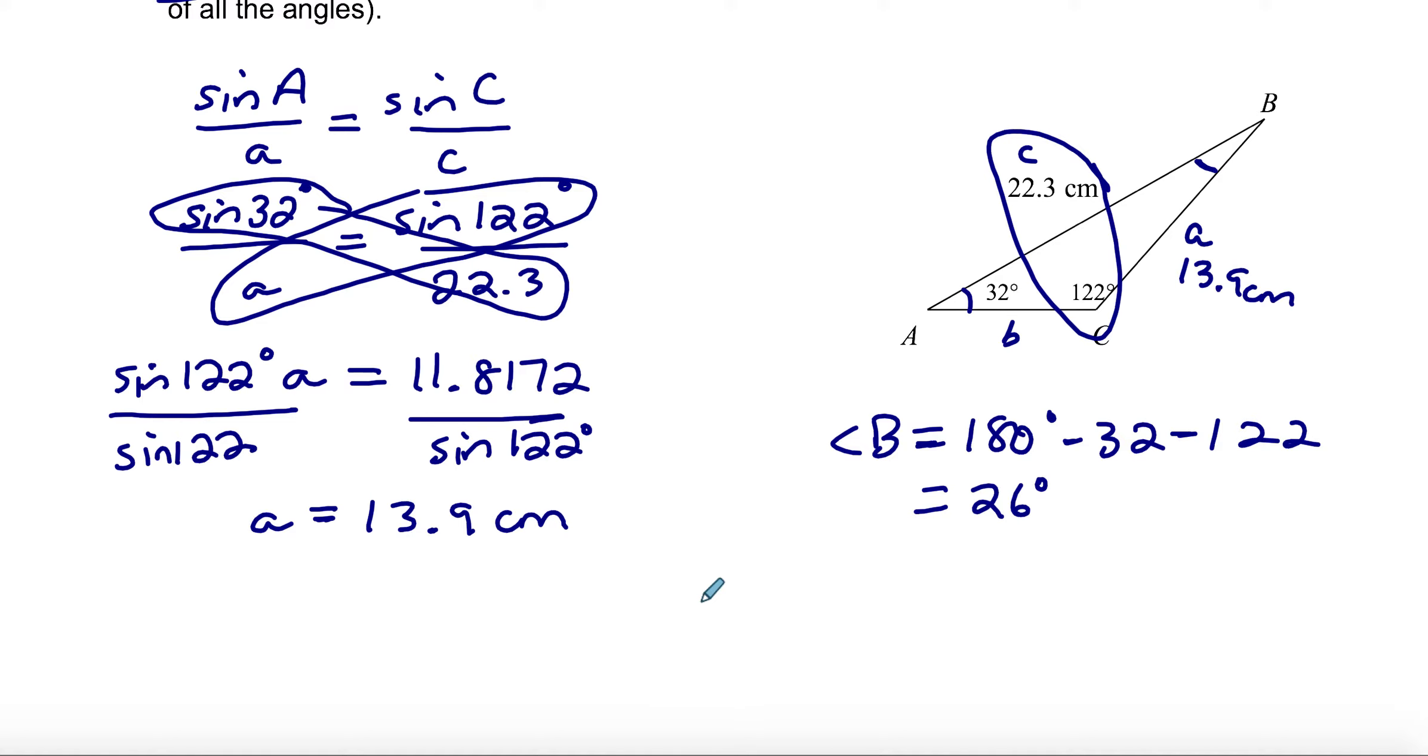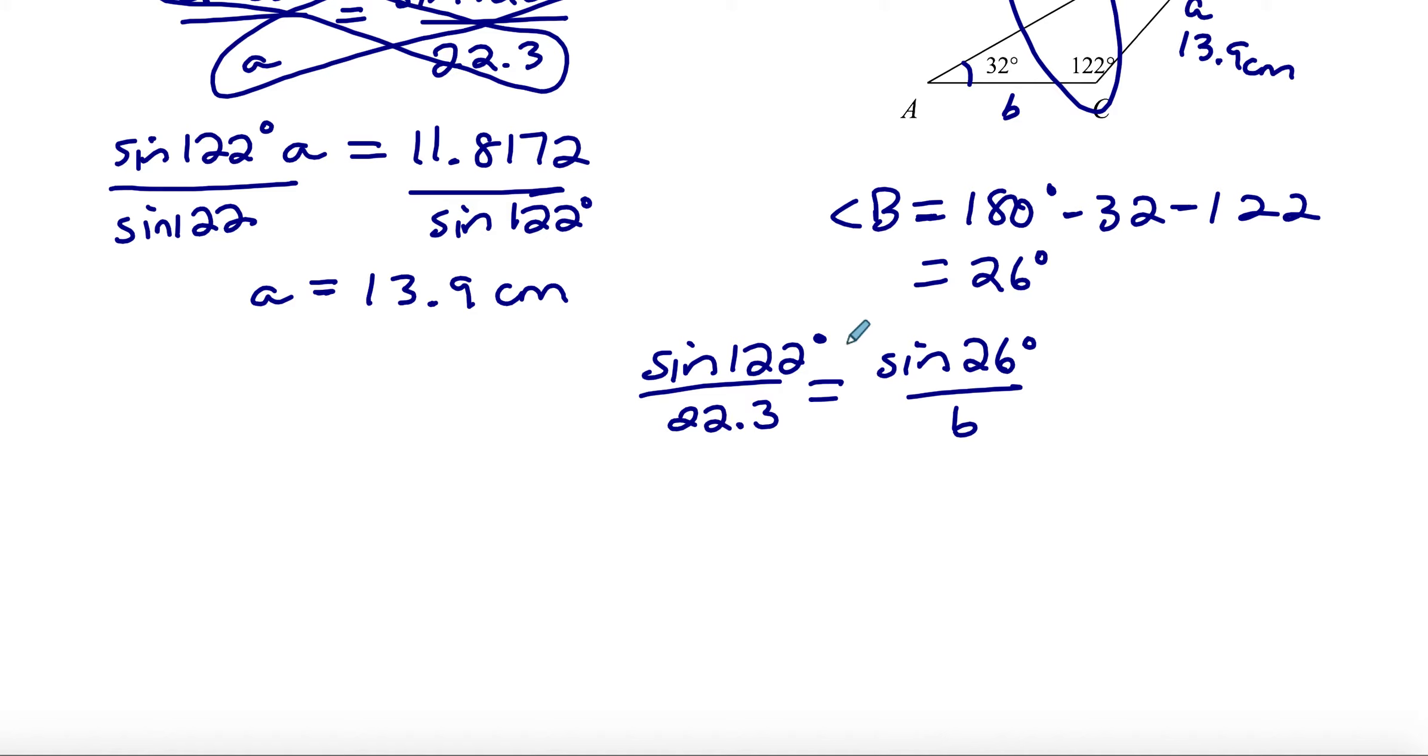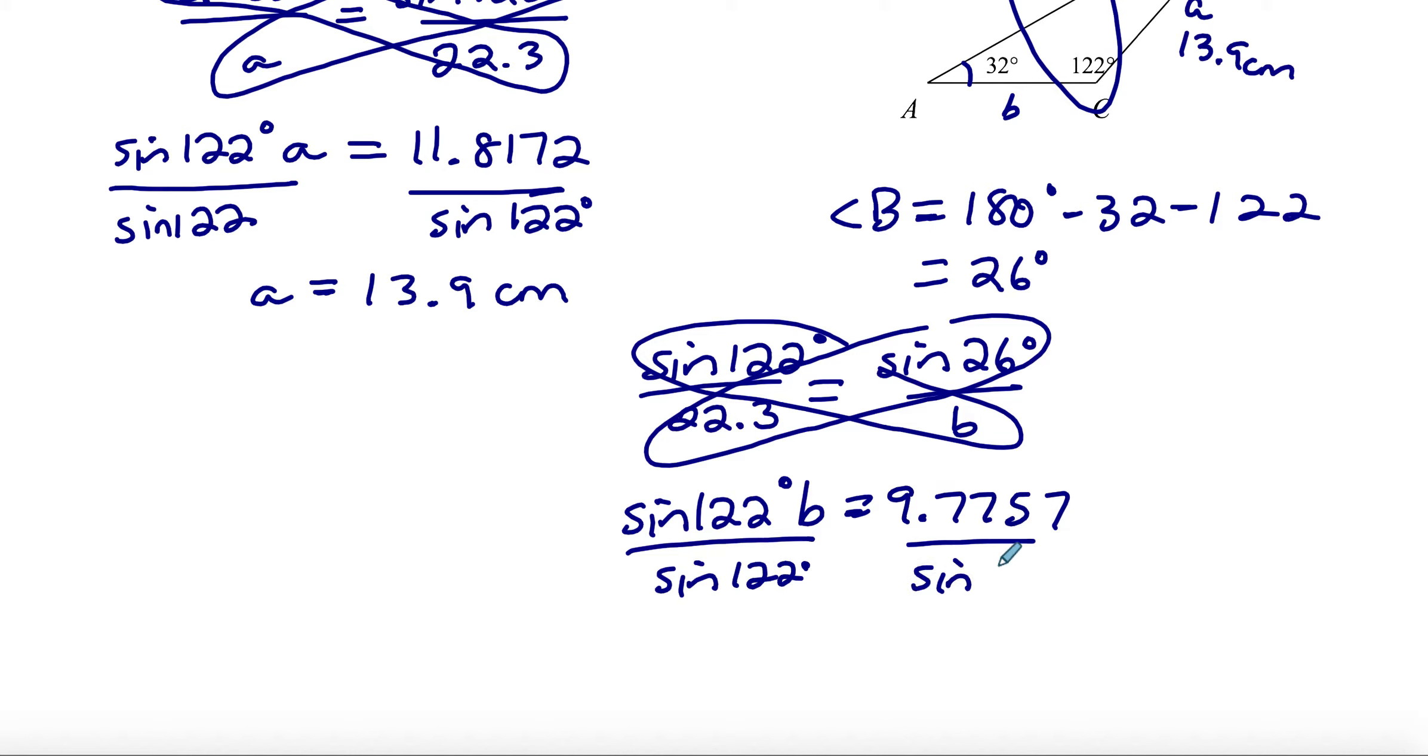The only thing now we're missing is side B. I could use the sine law again, but I think I might use the 122 again because I know that's correct. Sine 122 over 22.3 equals the sine of 26 over B. In order to find B, I'm going to cross multiply. I would multiply sine 26 times 22.3, and then divide by sine 122. Sine 26 times 22.3 is 9.7757, then divide both sides by sine 122. So B is 11.5 centimeters.